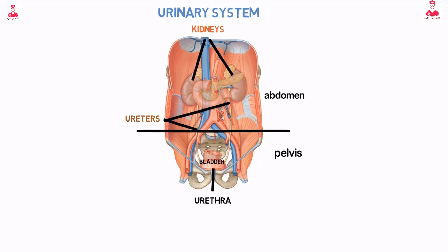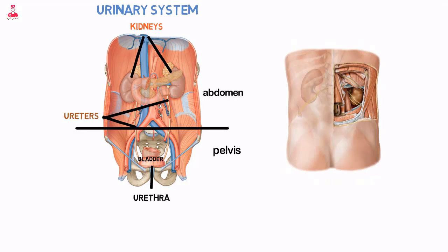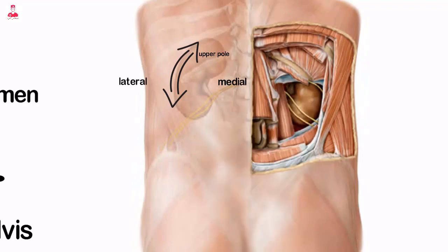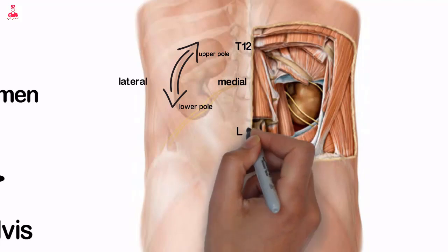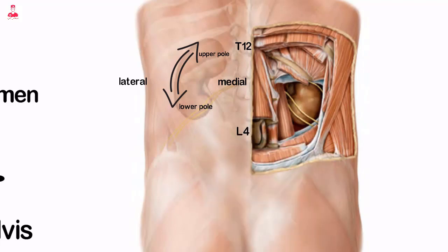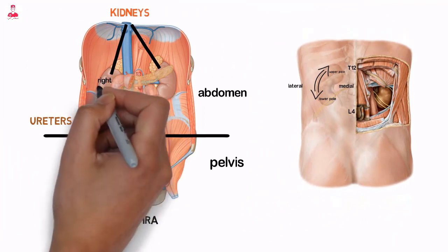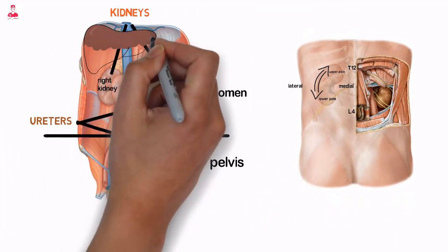The kidneys are retroperitoneal bean-shaped organs that lie against the posterior abdominal wall on either side of the vertebral column. They lie at an oblique orientation, with the upper poles more medial and posterior than the lower poles. They are located on each side of the spine between T12 and L4, and are embedded in perirenal fat. The right kidney is usually slightly lower due to displacement by the liver.